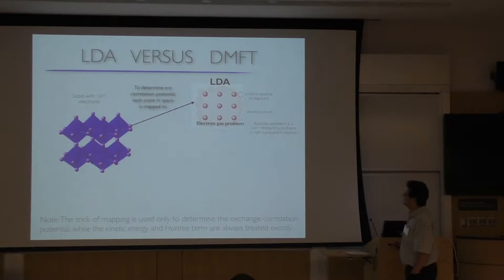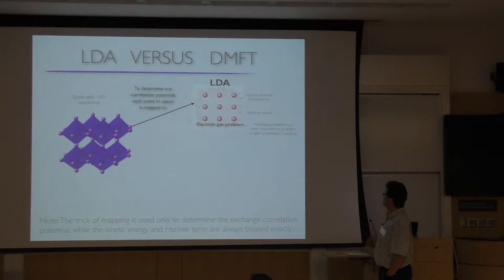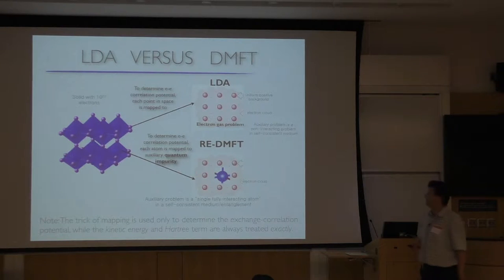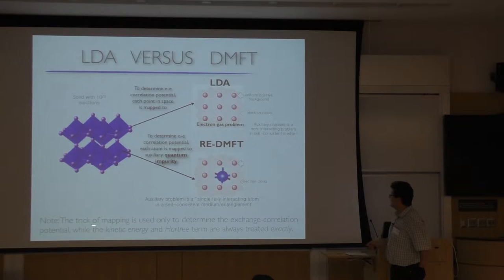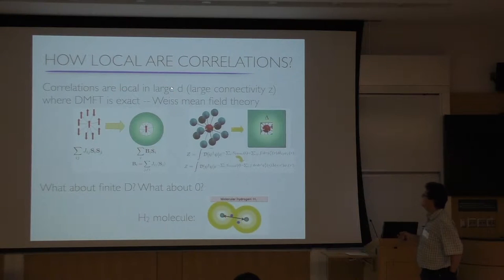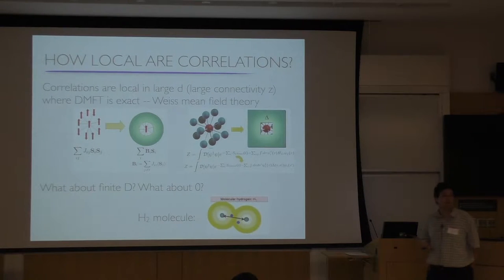Let me give you an overview of what we discussed. In standard DFT, in order to determine the electron correlation potential, we map each point in 3D space to an electron gas problem. In DMFT, we map the problem of an ion into the problem of a quantum impurity — less restrictive than in standard DFT. The trick is only done to get the exchange-correlation potential or the self-energy Σ, not to approximate the Dyson equation or kinetic energy. Correlations are very local in large D; when dimension or connectivity goes to infinity, dynamical mean-field theory is exact, just like any Weiss mean-field theory.